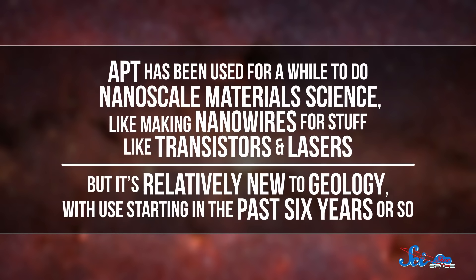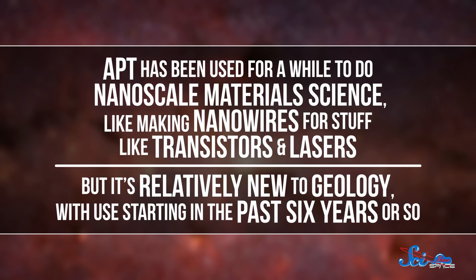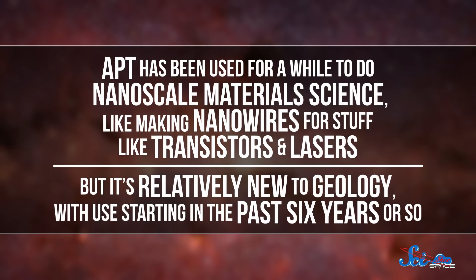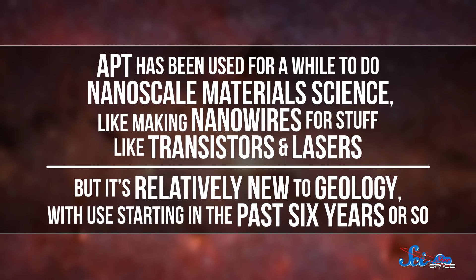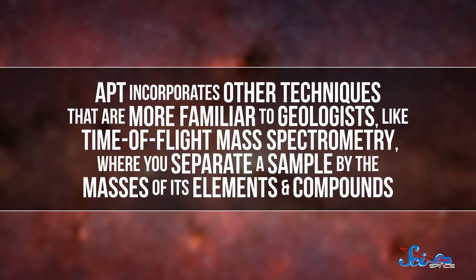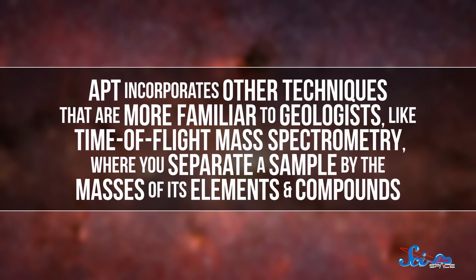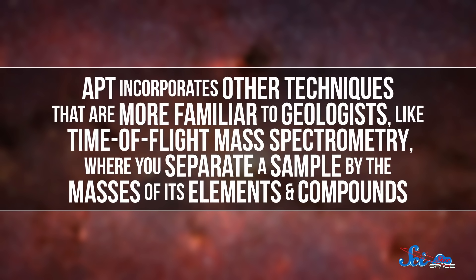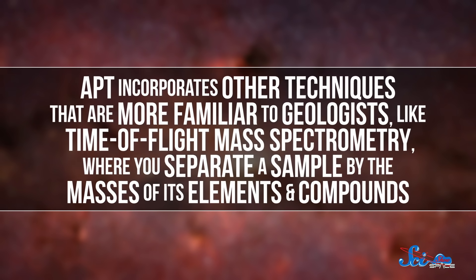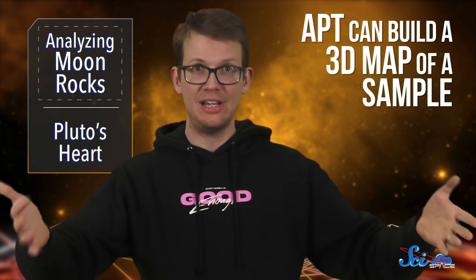APT has been used for a while to do nanoscale material science, like making nanowires for stuff like transistors and lasers. But it's relatively new to geology, with use starting in the past six years or so. APT incorporates other techniques that are more familiar to geologists, like time-of-flight mass spectrometry, where you separate a sample by the masses of its elements and compounds.